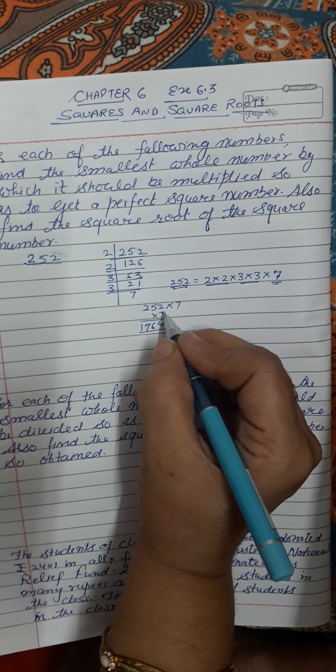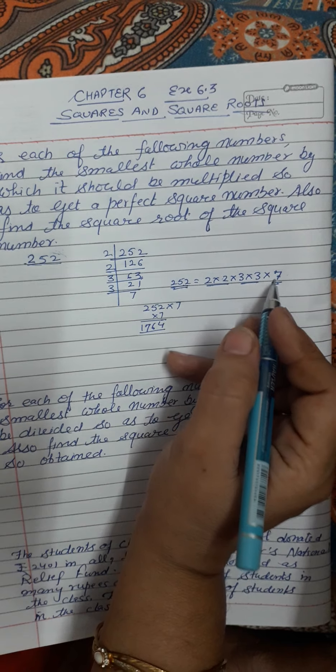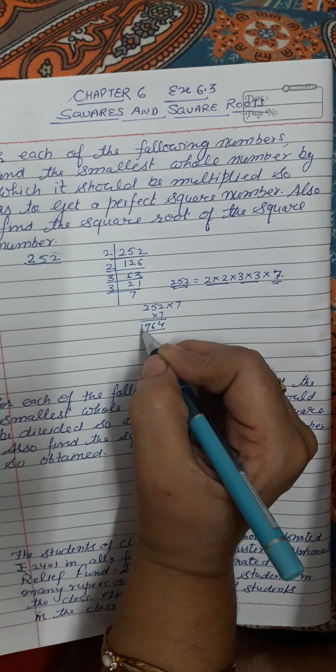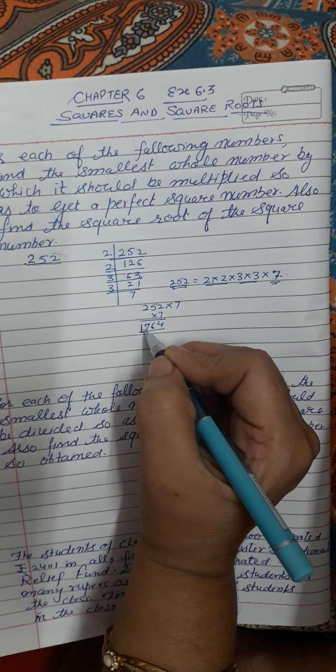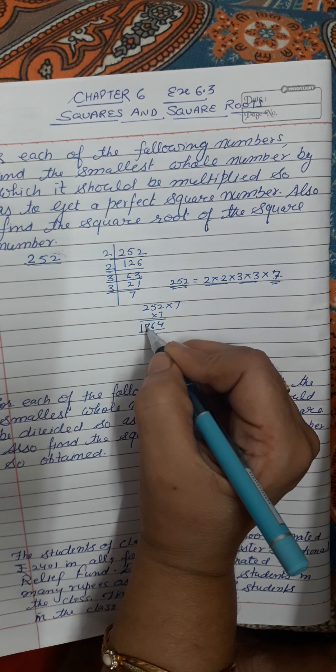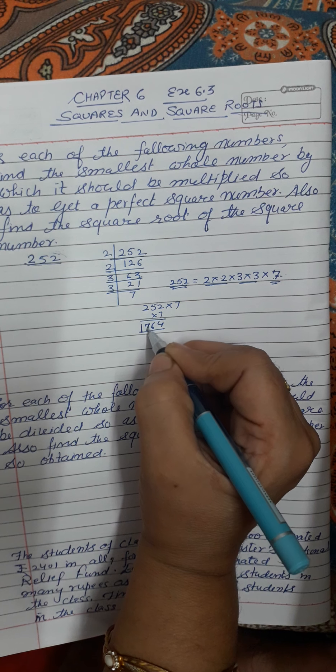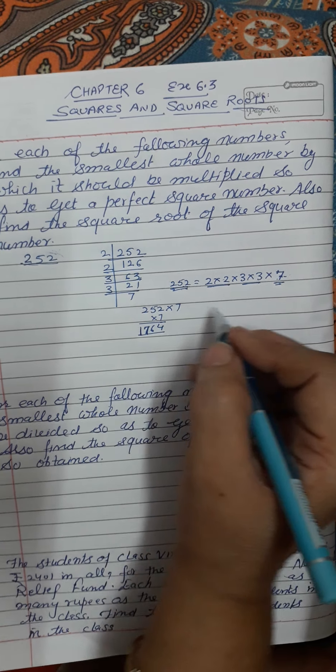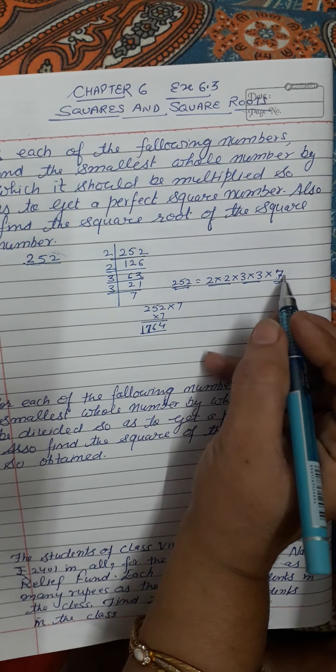Why? Because we have multiplied the remaining 7. This is the number which we have multiplied. So if we have multiplied it by 7, then we will get a square root.